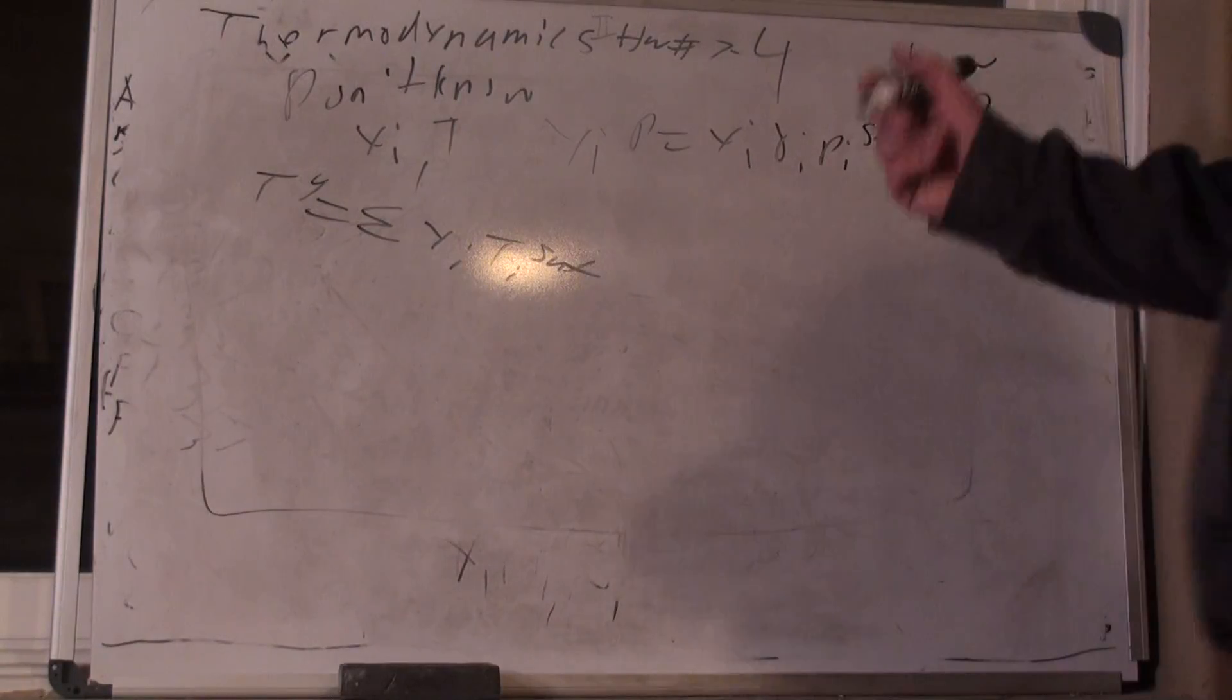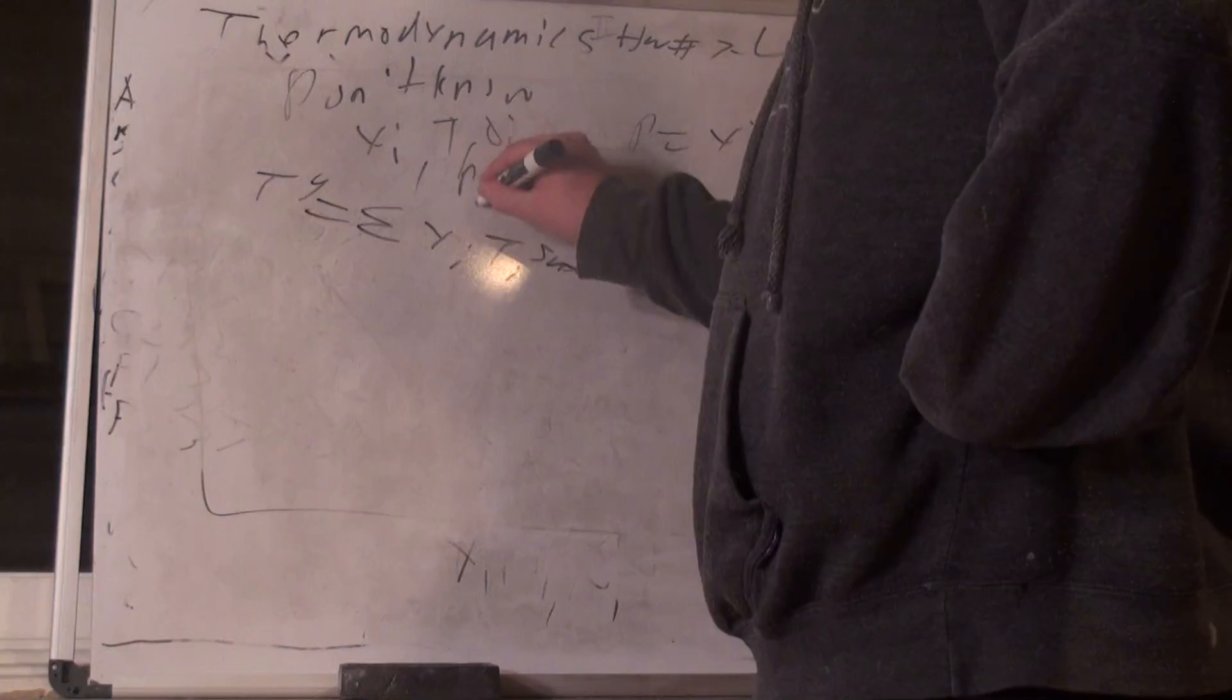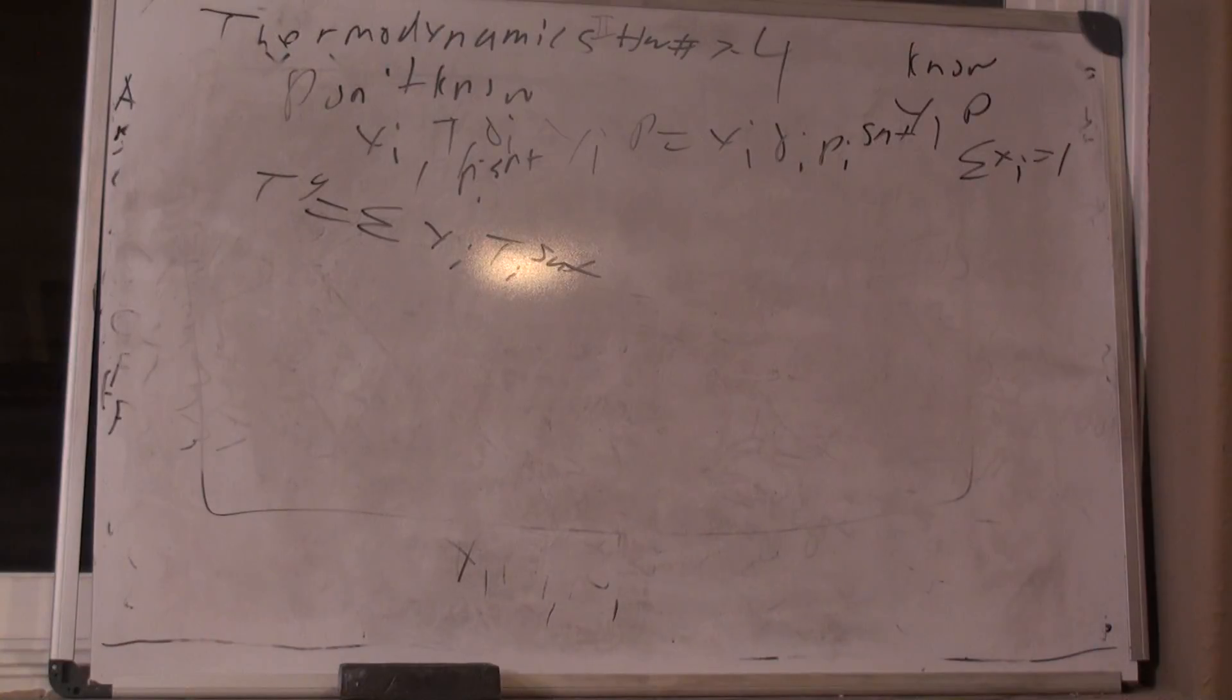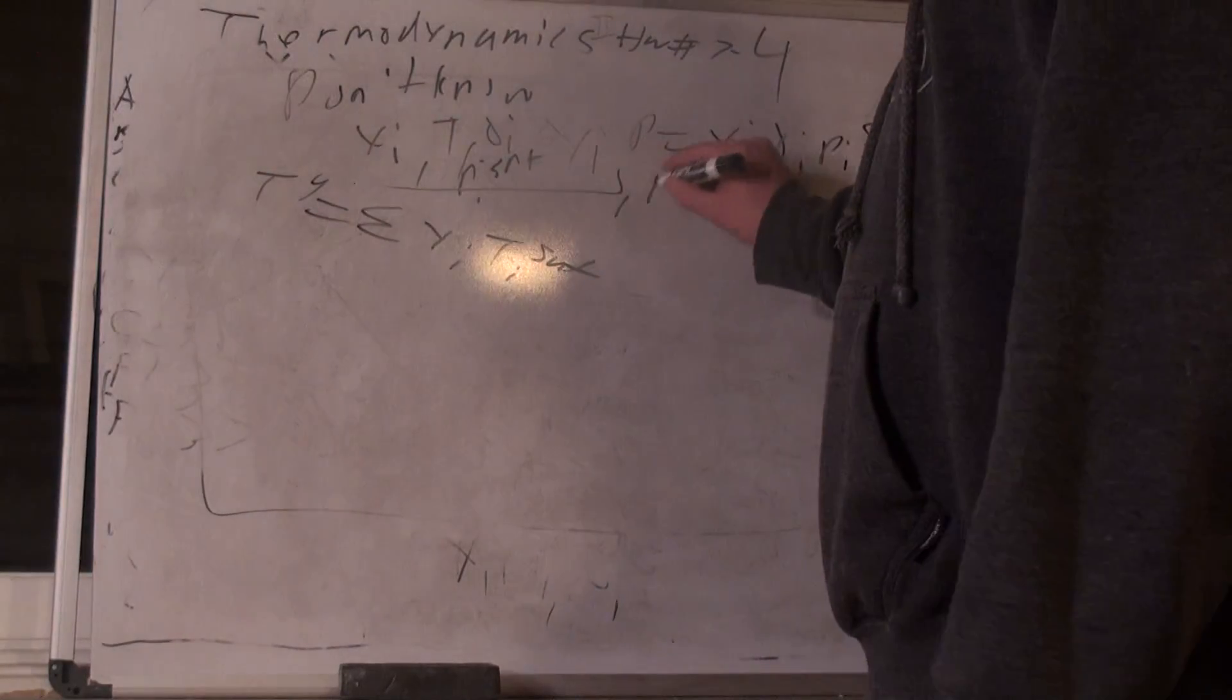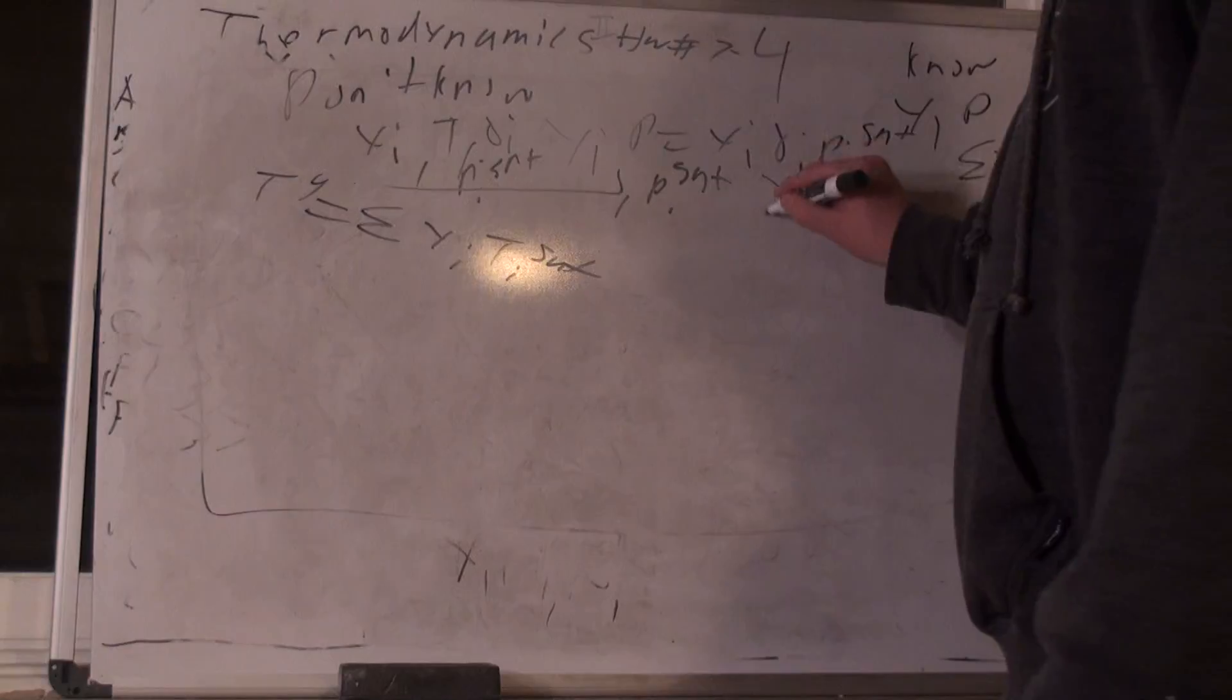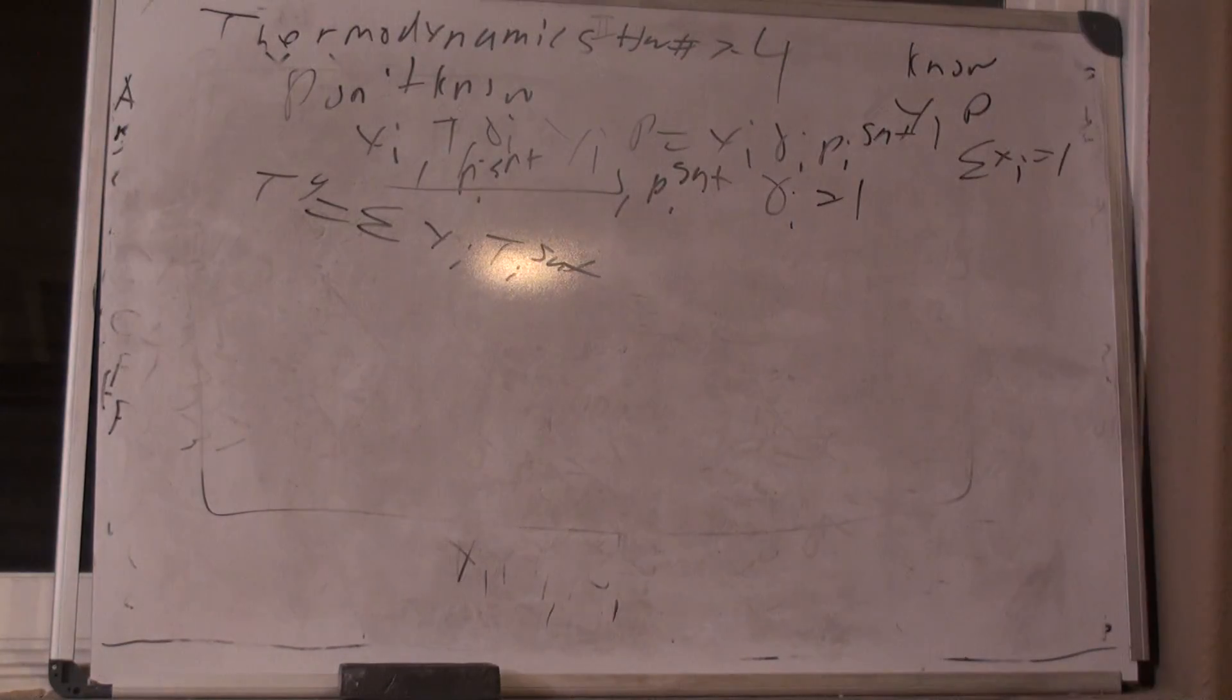Now that I have a temperature, what else don't I know? I don't know gamma i. I don't know pi sat. Do I have enough to get pi sat? Yeah. So I can use this to get pi sat. Do I have enough to get gamma i? No, I don't. Because gamma i also depends upon xi, which I still don't have. And so what did I do when I didn't know xi in the past? I had to assume something. I have to assume that gamma i equals one. I have to assume that to begin with, essentially.